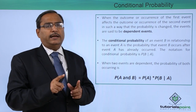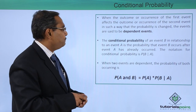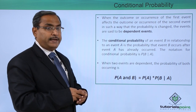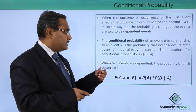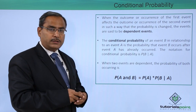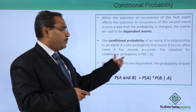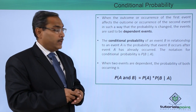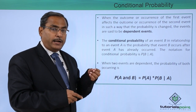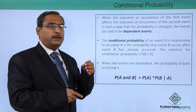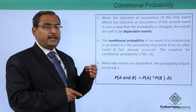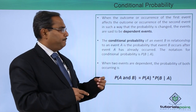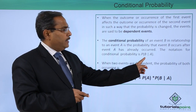If it is so, then we can say that two events are dependent. The conditional probability of an event B in relationship to an event A is the probability that event B occurs after event A has already occurred. The notation for the conditional probability is P(B|A), meaning event A has already occurred, and we are calculating the probability of occurrence of B after event A has occurred — probability of event B given event A.